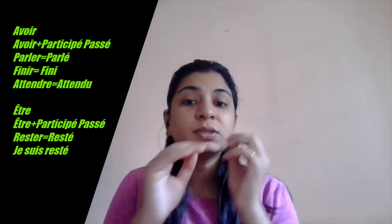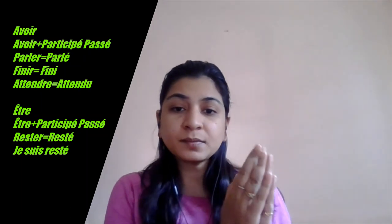Next is the third category — the RE verbs. In RE verbs we cut the RE and put U instead. For example, attendre: we cut the RE and add U, giving attendu. So j'ai attendu — I was waiting. In a similar way we use the past tense with RE verbs.